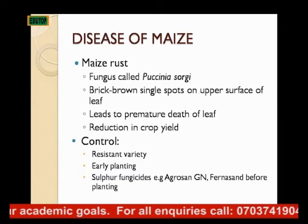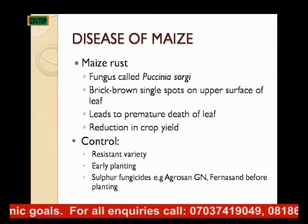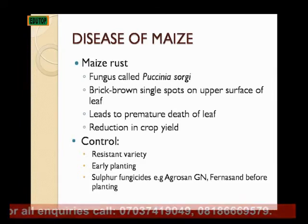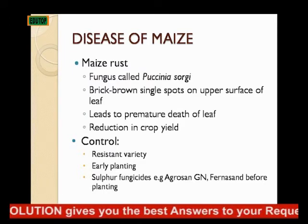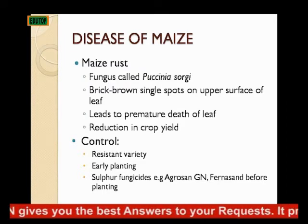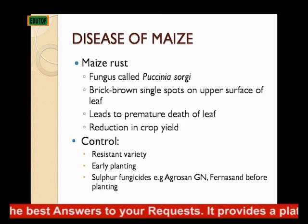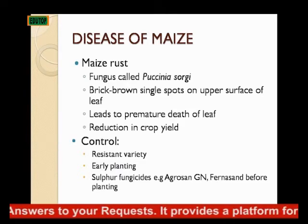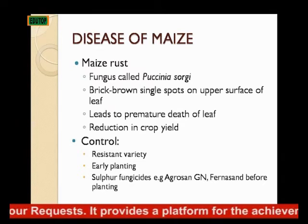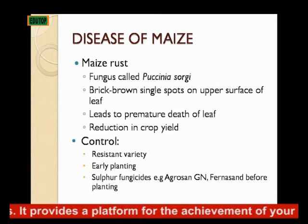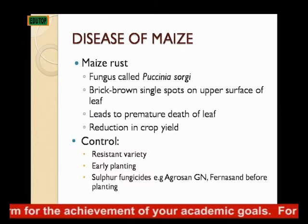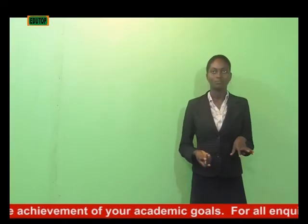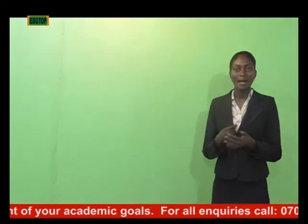The disease of maize is maize rust, caused by a fungus called Puccinia sorghi. It gives brick-brown single spots on the upper surface of the leaf and leads to the premature death of the leaf, which eventually leads to reduction in crop yield. You can control maize rust by planting resistant varieties, by early planting, or by applying sulfur fungicides such as Aglotin GN and Fenasan before planting.